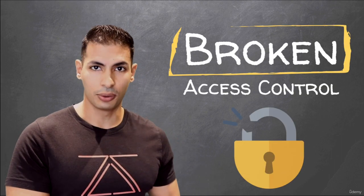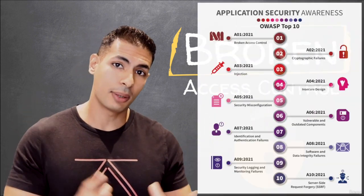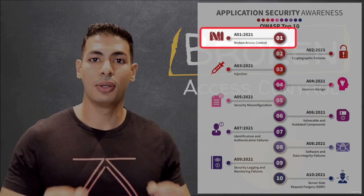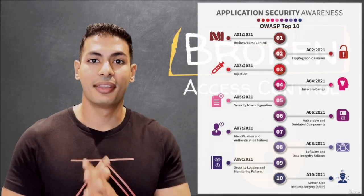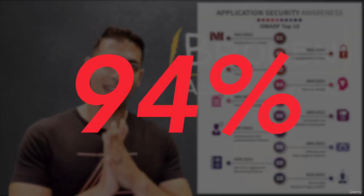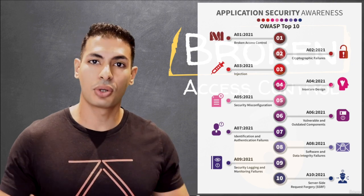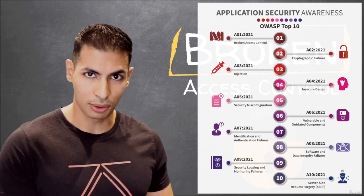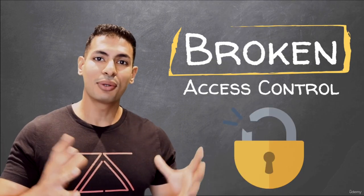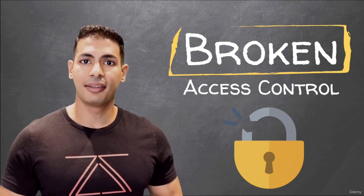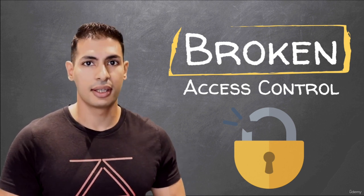The next bug or vulnerability we're going to cover is broken access control. According to the OWASP top 10 list, this is the most common security threat out there, with 94% of the websites tested being vulnerable to some sort of broken access control. Broken access control is actually a really large category that contains a number of subcategories.